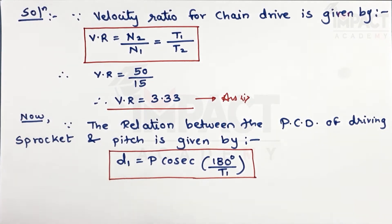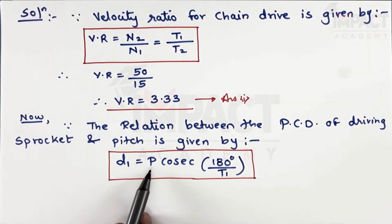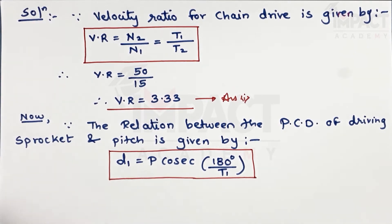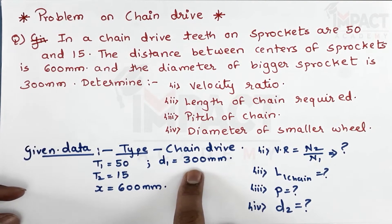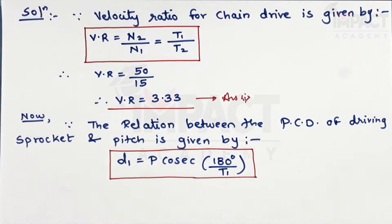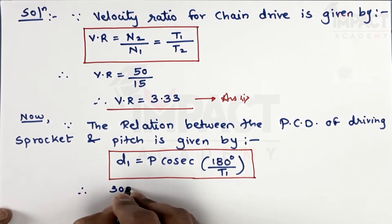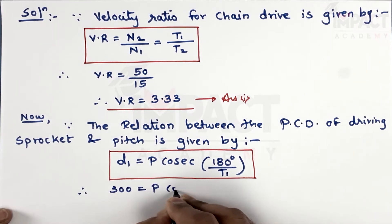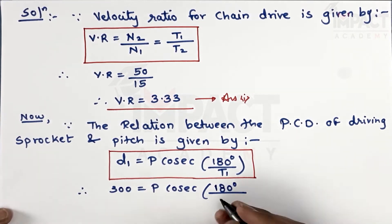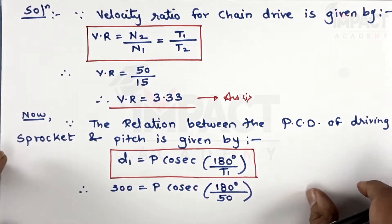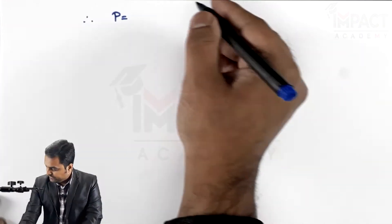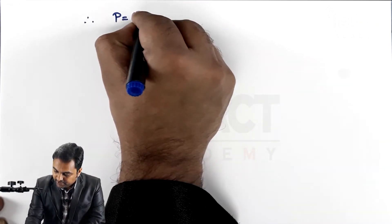This relation between pitch circle diameter and pitch was derived in previous videos. With d1 = 300 mm and t1 = 50, substituting into the formula gives: 300 = p × cosec(180°/50). Solving for pitch, p comes out to be 18.83 mm. That is the second answer.